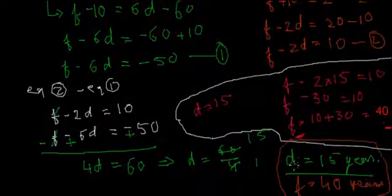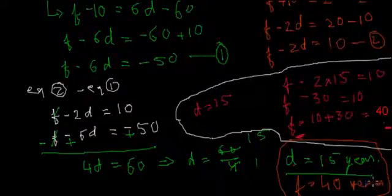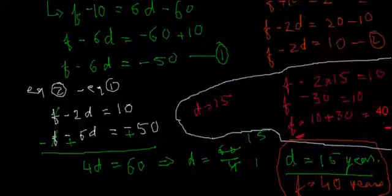So at present the daughter is 15 years old and the father is 40 years old. This is the solution — we have found their current ages. If you want, you can verify the statements which were given to us for 10 years in the past and 10 years in the future.